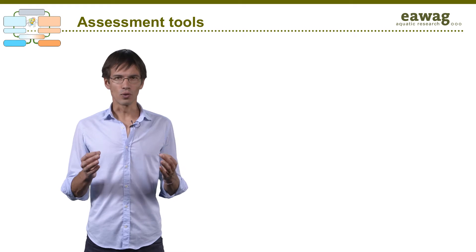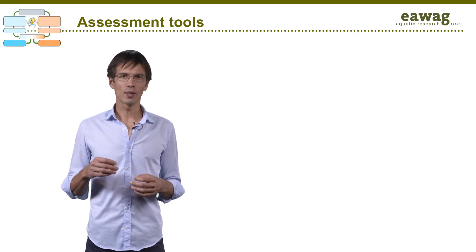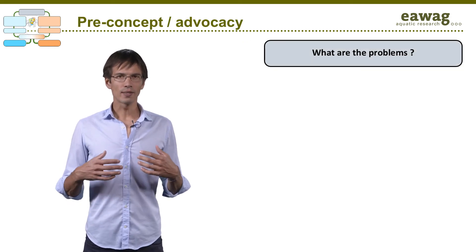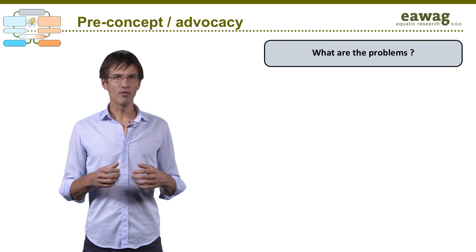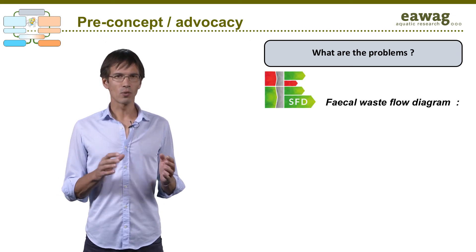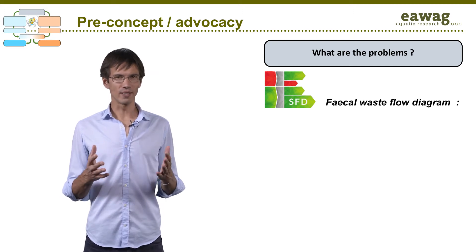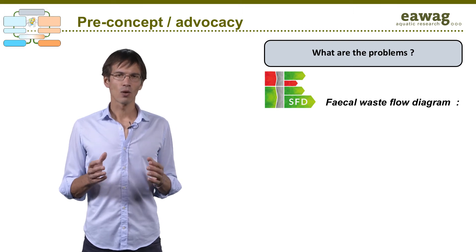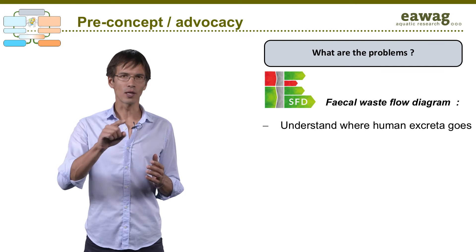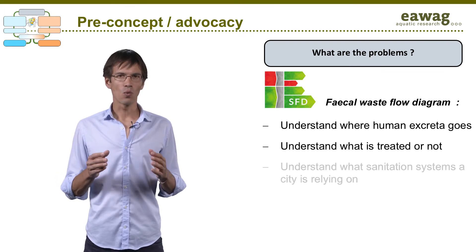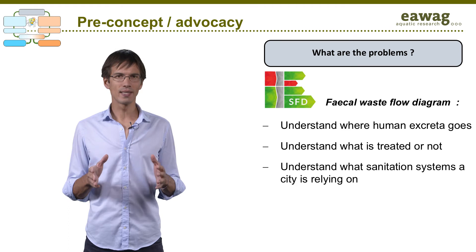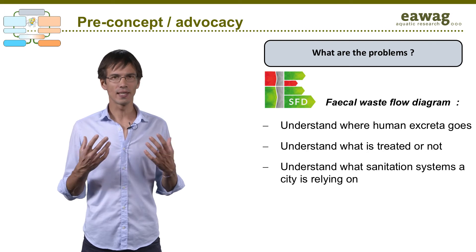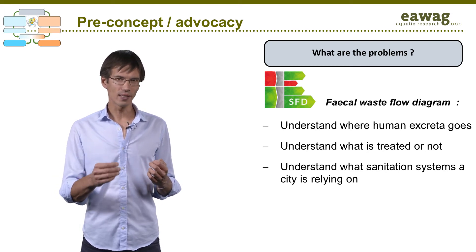Let's now look at a few tools that will help you structure your data collection and translate your data into useful visual outputs. At the preconcept stage, there is a tool called the Fecal Waste Flow Diagram, or Shit Flow Diagram, or in short SFD. The SFD fosters a certain data collection plan which helps you understand where human excreta goes, what is treated or not, and what sanitation systems your city is relying on. Data should be collected and discussed with the key sanitation stakeholders in order to get buy-in at an early stage.